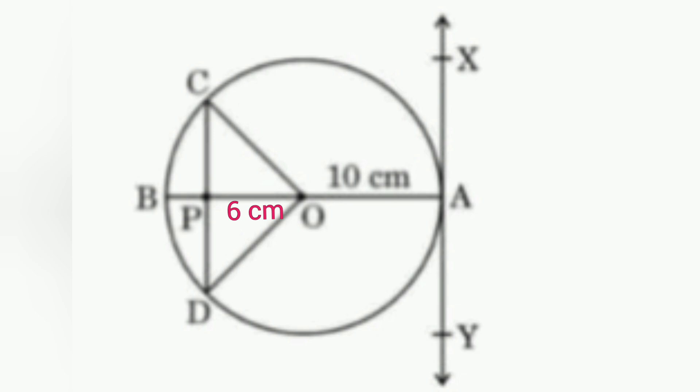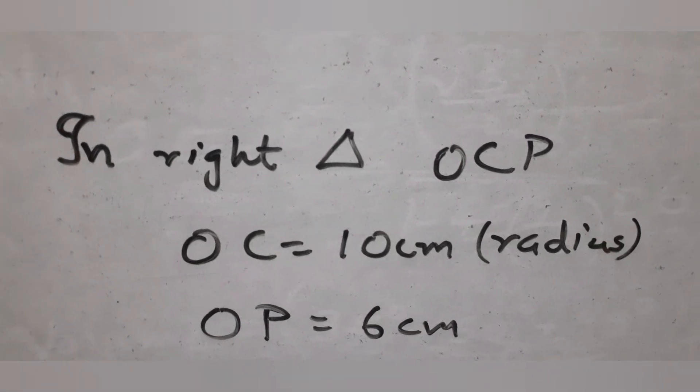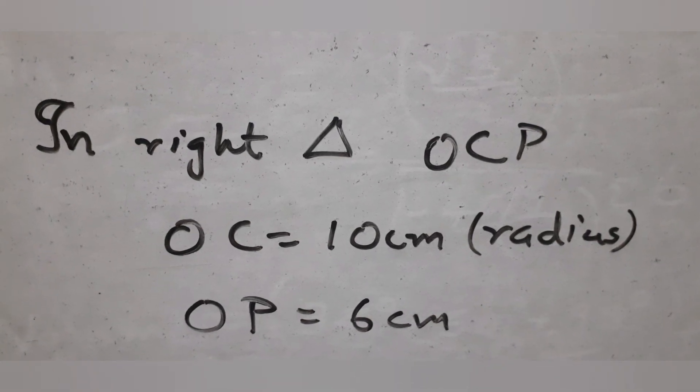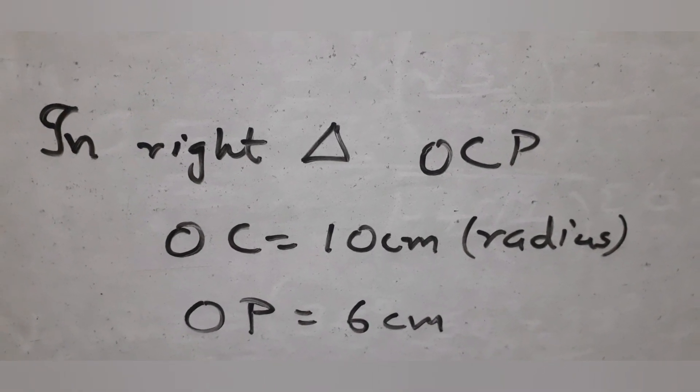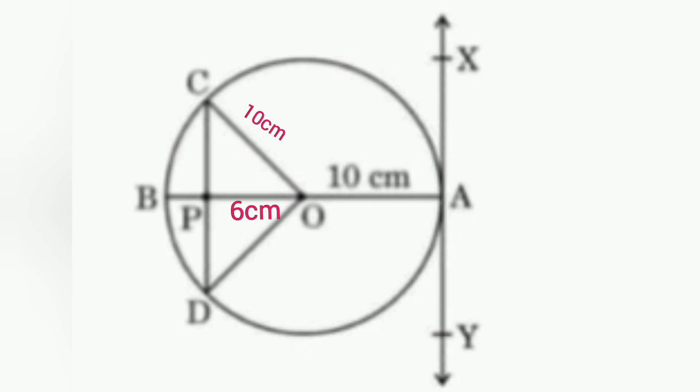OC is also a radius of the circle, so the length of OC is 10 centimeters. In right triangle OCP, OP equals 6 centimeters and the hypotenuse OC equals 10 centimeters.